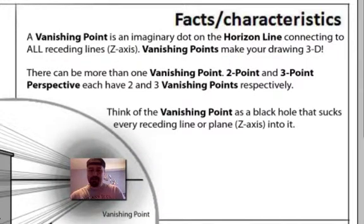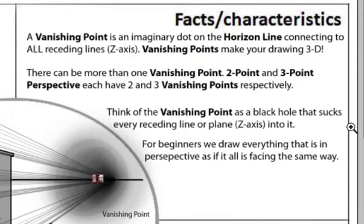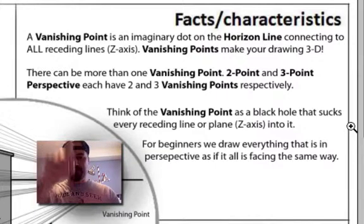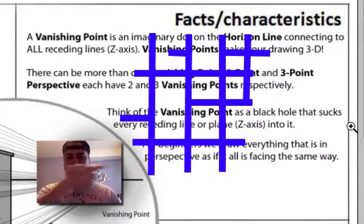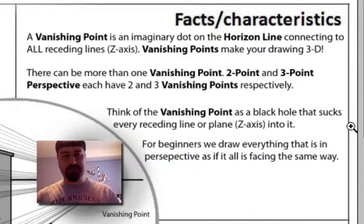Think of the vanishing point as a black hole that sucks everything into it. Also, for beginners, we draw everything that's in perspective as if it was all facing the same direction. That's why I pick buildings. Buildings are built around streets. Like in an inner city, they go one direction and then perpendicular another direction, like a grid. And so when we're working on perspective, we draw everything as if it's pointing the same way.